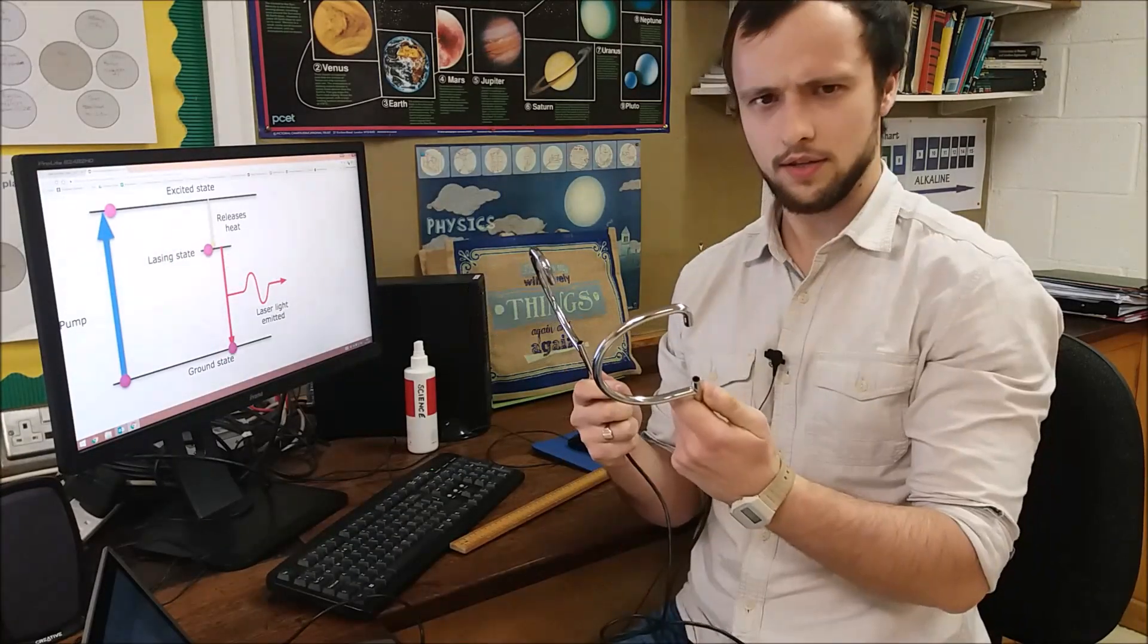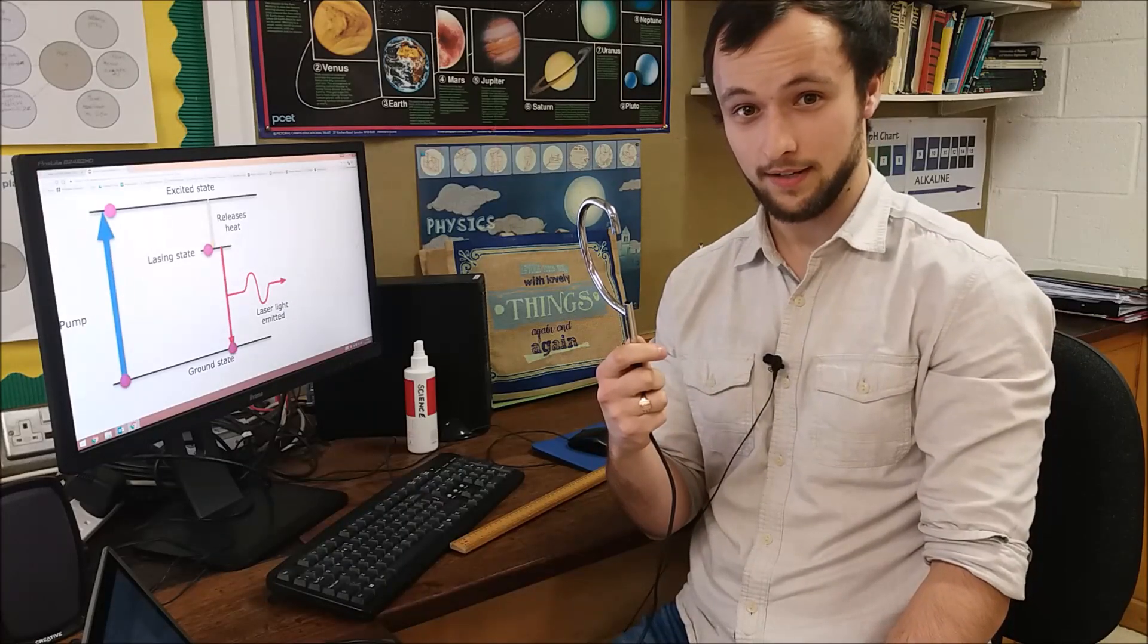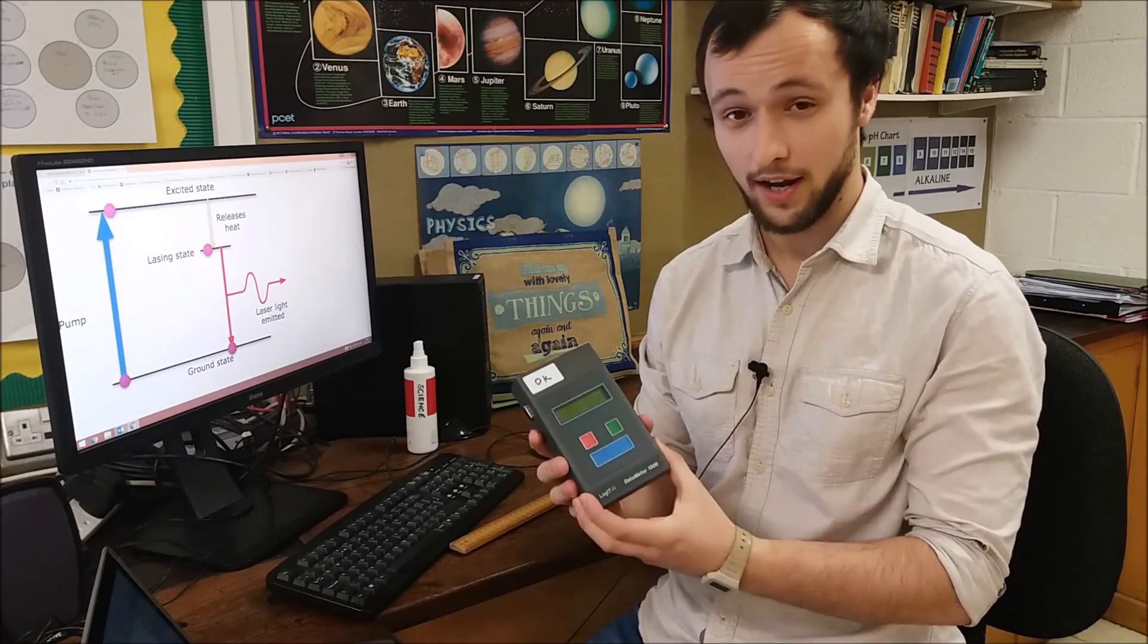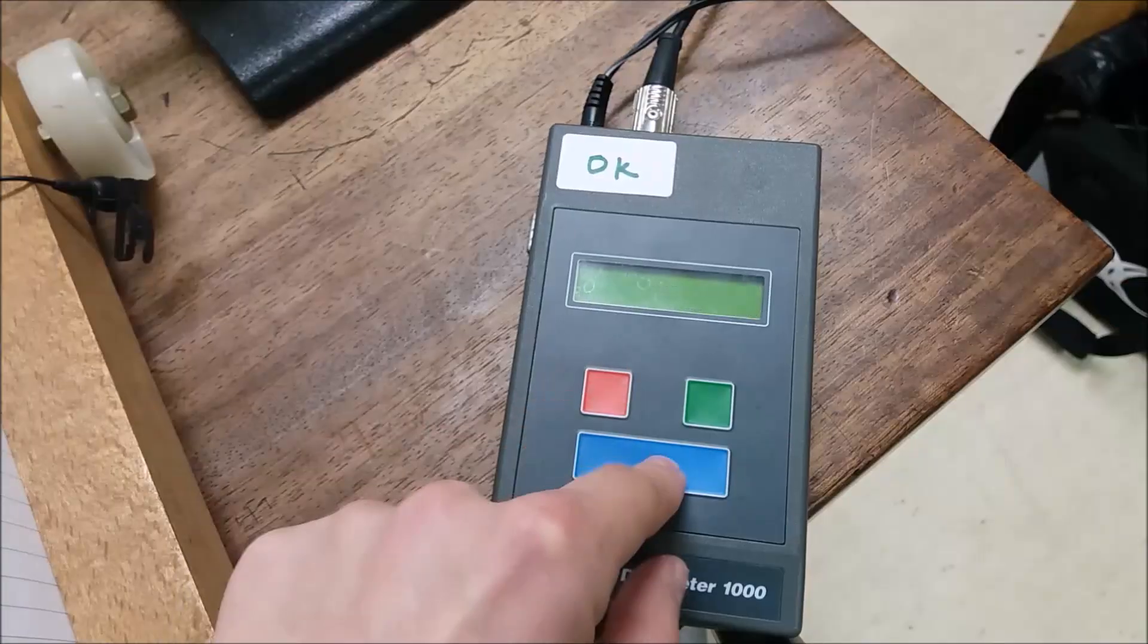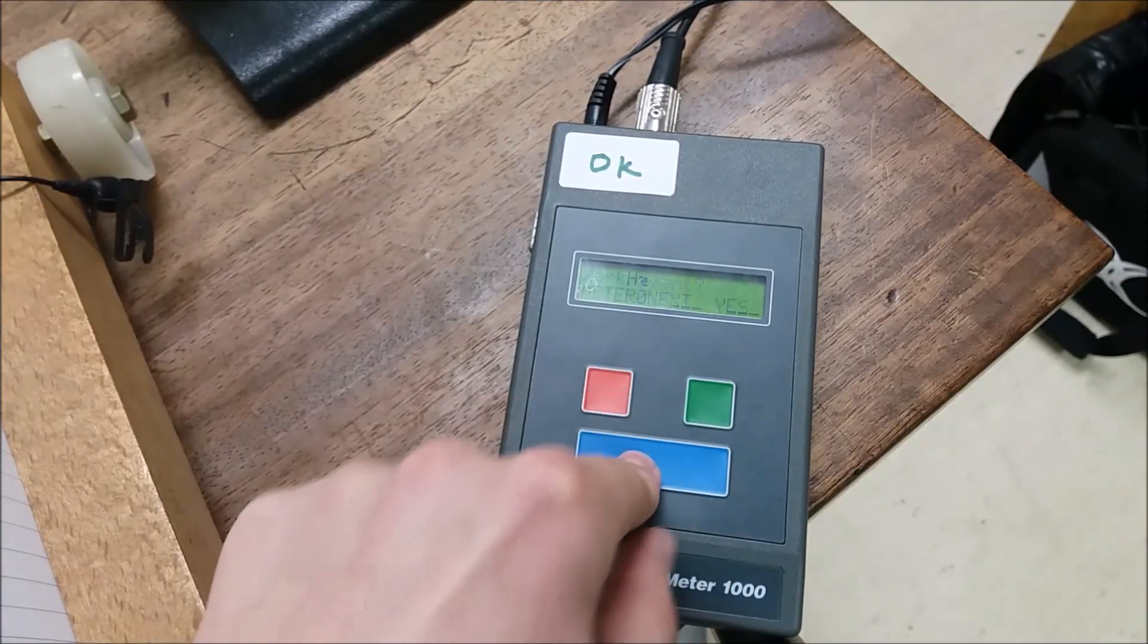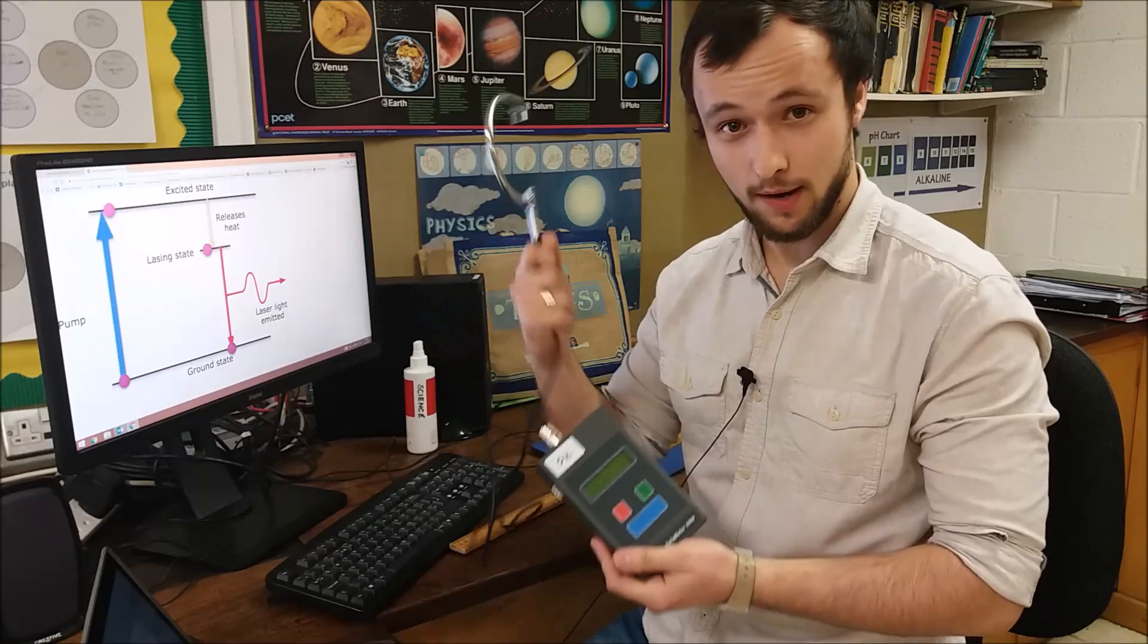This is a lightgate. This is another lightgate. This is a data logger to go with the lightgate, which I like to call a beepy box. Here's a lightgate plugged into the beepy box.